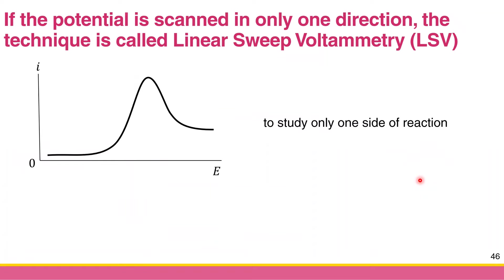For completeness, in cyclic voltammetry we scan the potential in both directions — positive and then back to negative. There is also a technique that scans in only one direction, like just from negative to positive or positive to negative potential. This technique is called linear sweep voltammetry or LSV. You can get the same information as from a cyclic voltammogram but only half of it — either oxidation or reduction, depending on the scanning direction.